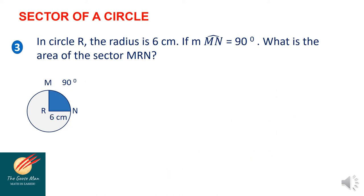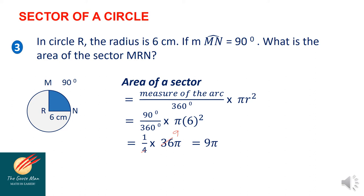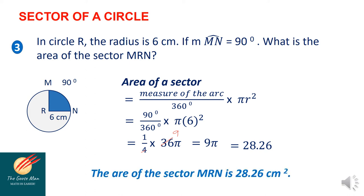Let's have another example. Number 3: in circle R, the radius is 6 cm. If the measure of arc M-N is equal to 90 degrees, what is the area of sector M-R-N? Using the formula: area equals measure of the arc over 360 times pi-R-squared. Substituting 90 and 6: 90 over 360 reduces to 1 over 4, and 6-squared is 36. So we have 1 over 4 times 36 pi. Factoring out, 36 divided by 4 gives us 9. So the area is 9 pi, and 9 times 3.14 gives approximately 28.26. Therefore, the area of sector M-R-N is 28.26 cm².